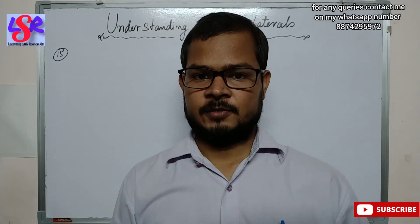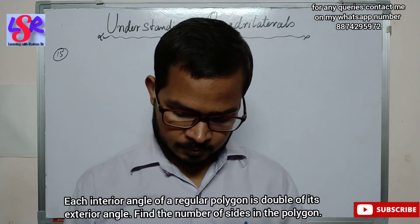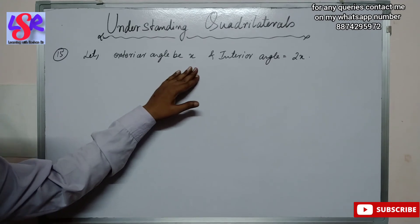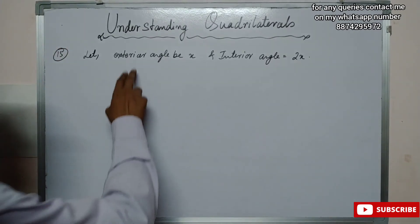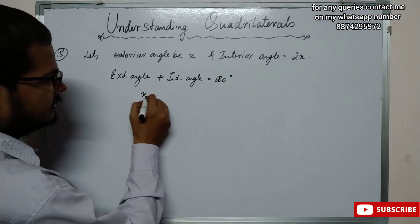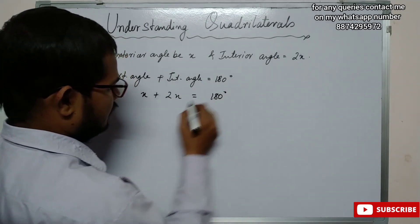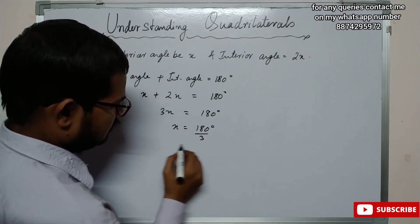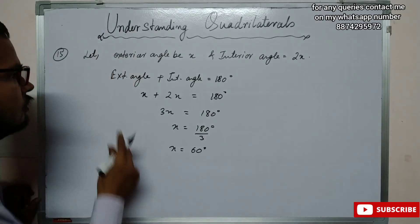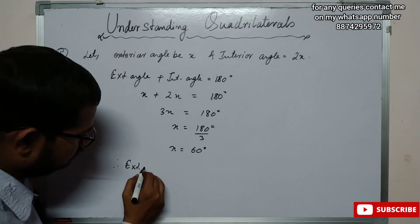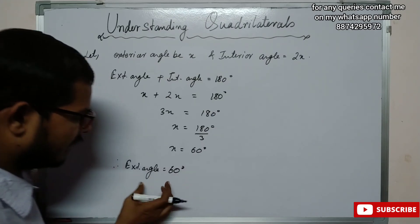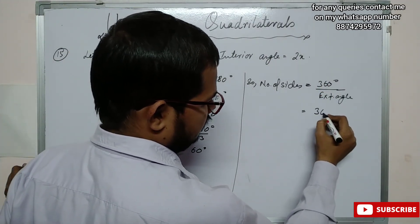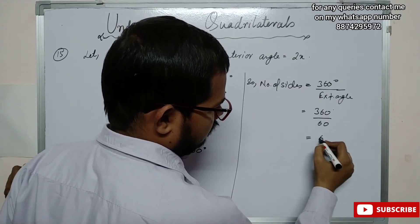In question number 15, each interior angle of a regular polygon is double its exterior angle. Find the number of sides. Let the exterior angle be x, so the interior angle is 2x. Since x plus 2x equals 180 degrees, 3x equals 180 and x equals 60 degrees. The exterior angle is 60 degrees. The number of sides equals 360 divided by 60, which is 6 sides.